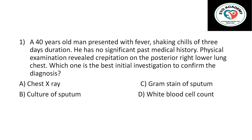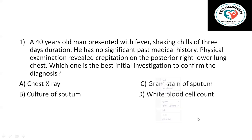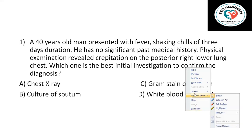Question number one: a 40-year-old man presented with fever and shaking chills of three days duration. He has no significant past medical history. Physical examination revealed crepitations on the posterior right lower lung. Which one is the best initial investigation to confirm the diagnosis? A: chest X-ray, B: culture of sputum, C: gram stain of sputum, D: white blood cell count. Please pause the video and try to answer the question.